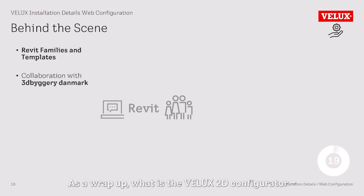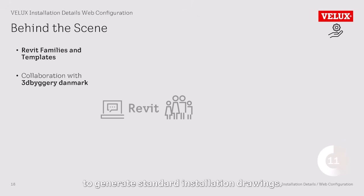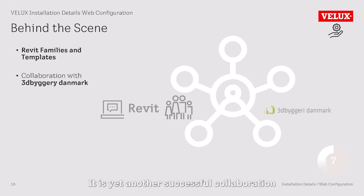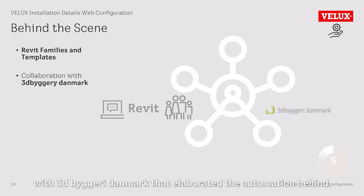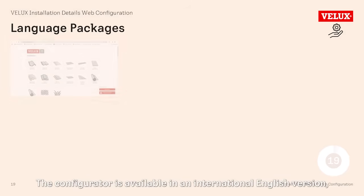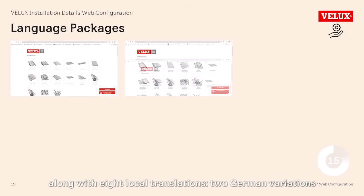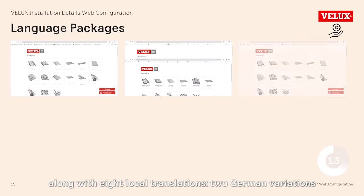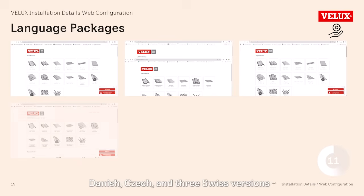As a wrap-up: the Velux 2D Configurator is a Revit families and templates based online tool to generate standard installation drawings. It is the result of a successful collaboration with 3D Biggory Denmark, who elaborated the automation behind it. The configurator is available in an international English version along with 8 local translations, including 2 German variations for Germany and Austria, and Danish.